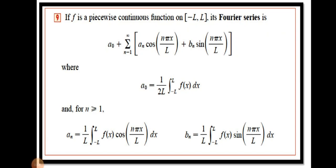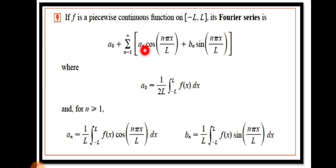Today we are going to talk about Fourier series and how we can express a piecewise function f(x) using sine and cosine terms. If f(x) is a piecewise continuous function over the interval negative l to l, then its Fourier series equals a₀ plus the summation of aₙ cos(nπx/l) plus bₙ sin(nπx/l), where the summation runs from n equals 1 to infinity.